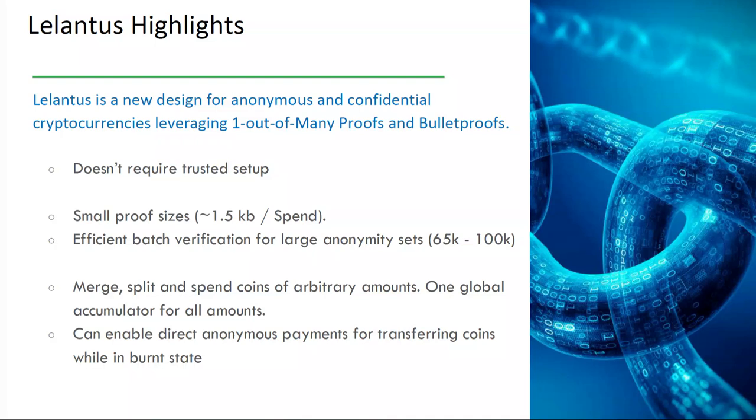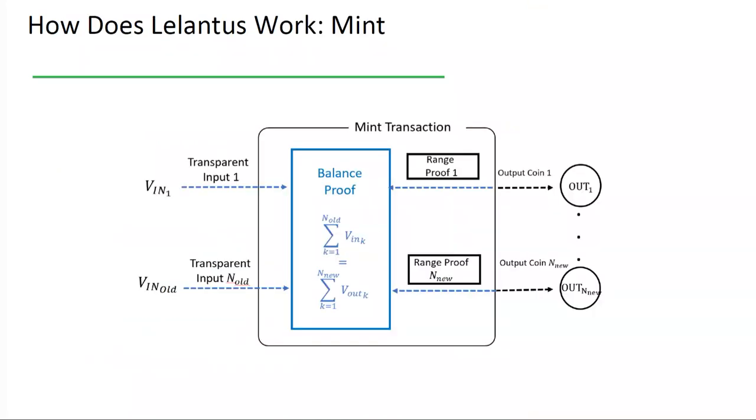So, we created Lelantis to address this functional and performance limitations of Zerocoin. It's a new, brand new design, inspired by Zerocoin and confidential transaction concepts, which leverage one out of many proof constructions and bullet proofs. And it doesn't require trusted setup. Proof sizes are relatively small. They are about 1.5 kilobyte per each input spent. It enables efficient verification of transaction in batches by supporting large anonymity sets, sets of up to 65,000 or even 100,000. Lelantis enables to work with coins of arbitrary amounts, and also enables direct anonymous payments, to some extent.